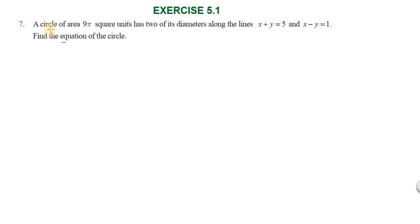Hi students, greetings from Six Situations Academics. This is question number 3: A circle of area 9π square units has 2 of its diameters along the lines x plus y equal to 5 and x minus y equal to 1. Find the equation of the circle.